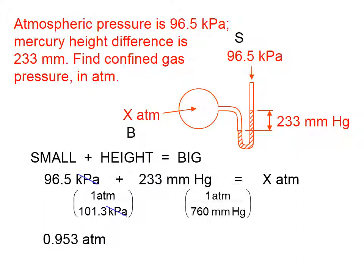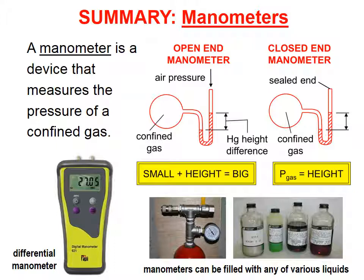We're going to do the same thing for millimeters of mercury. One atmosphere of pressure is 760 millimeters of mercury. The units cancel. And 233 divided by 760 is 0.307 atmospheres. Now all the units agree. We simply add these up to get 1.26 atmospheres.